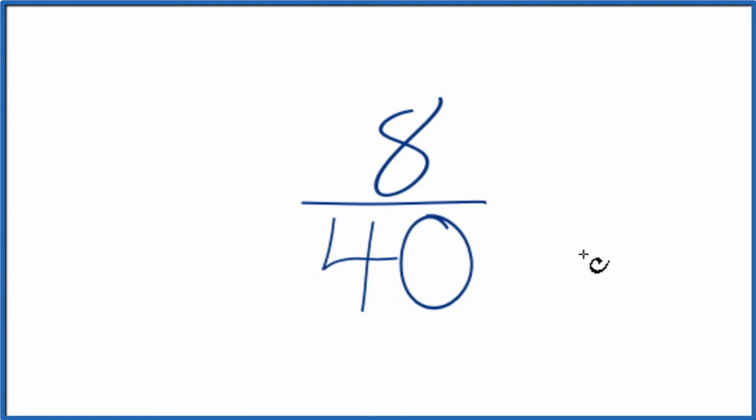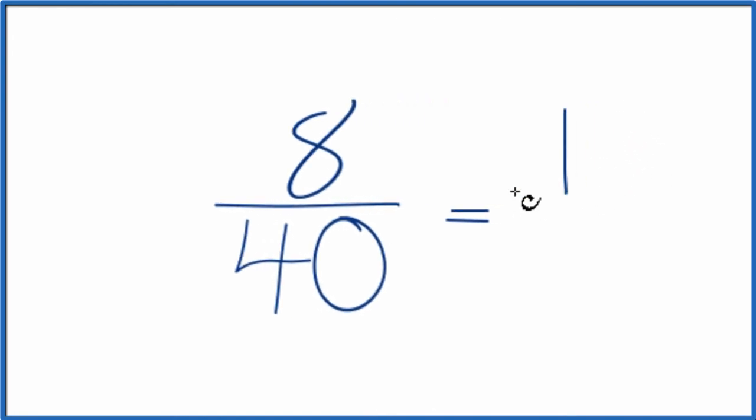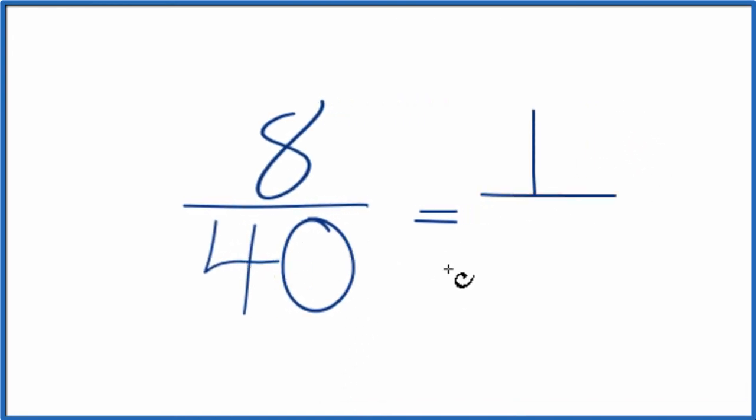To do that, what we need to do is find a common factor for 8 and 40. If you know that 8 goes into 40, you could just divide the numerator by 8. 8 divided by 8, that's 1, and the denominator, 40 divided by 8 is 5.